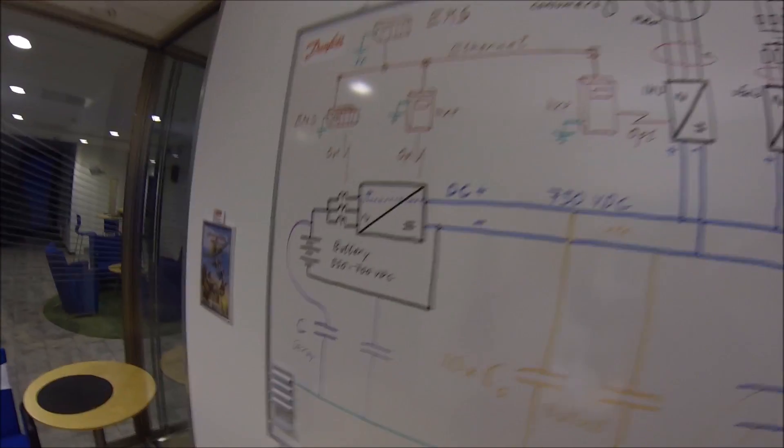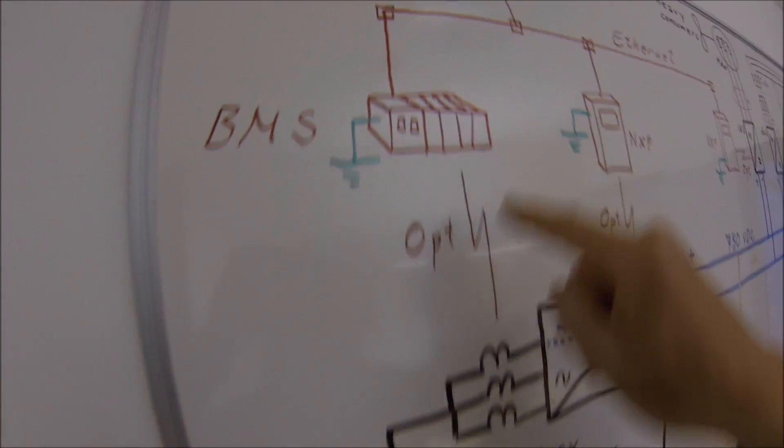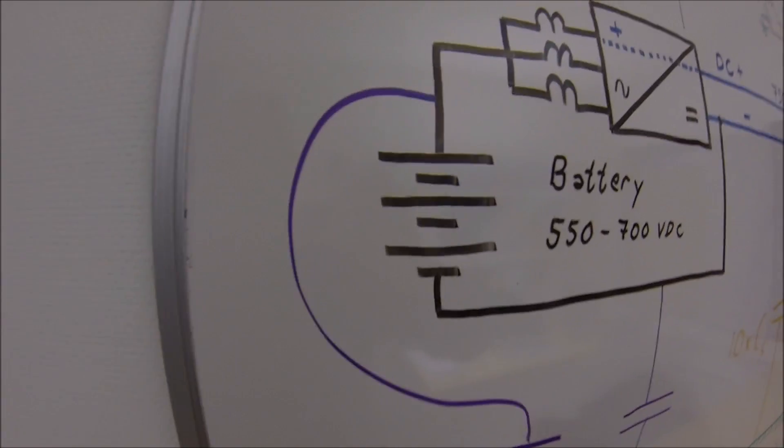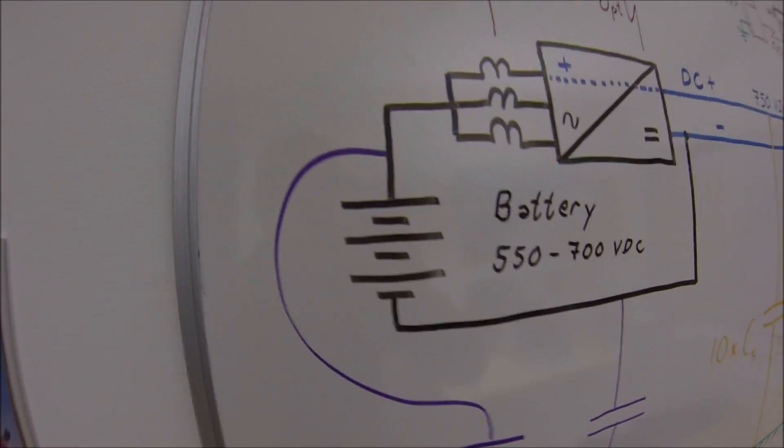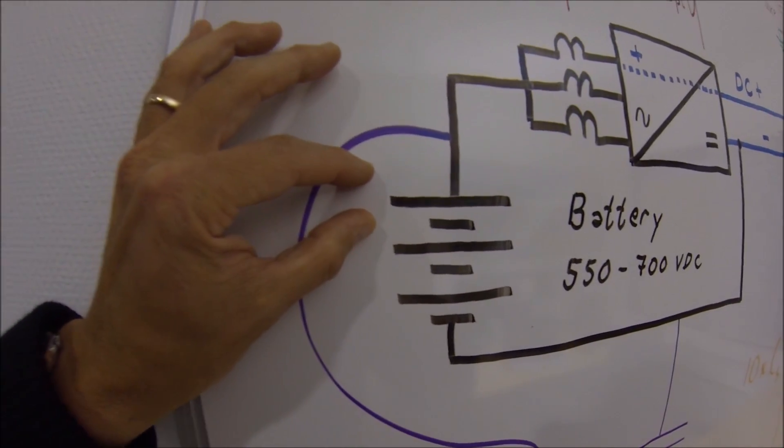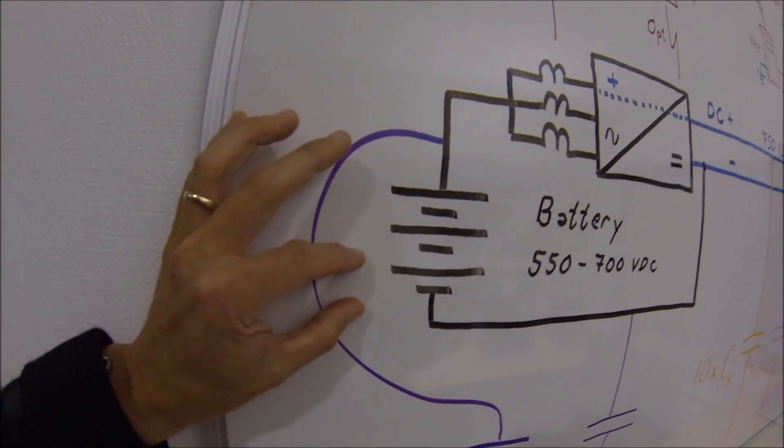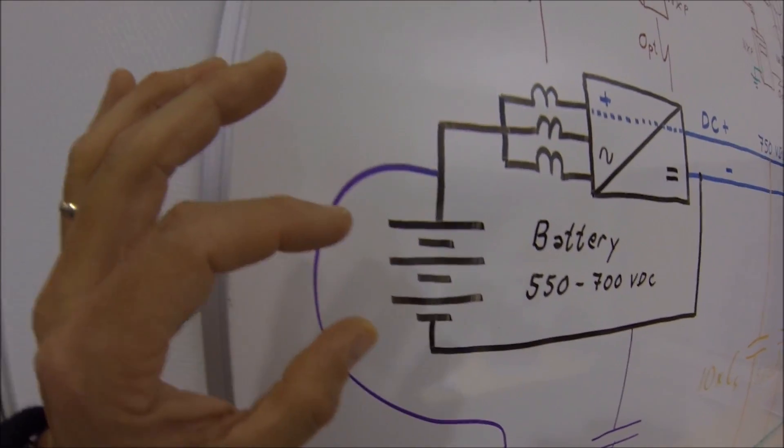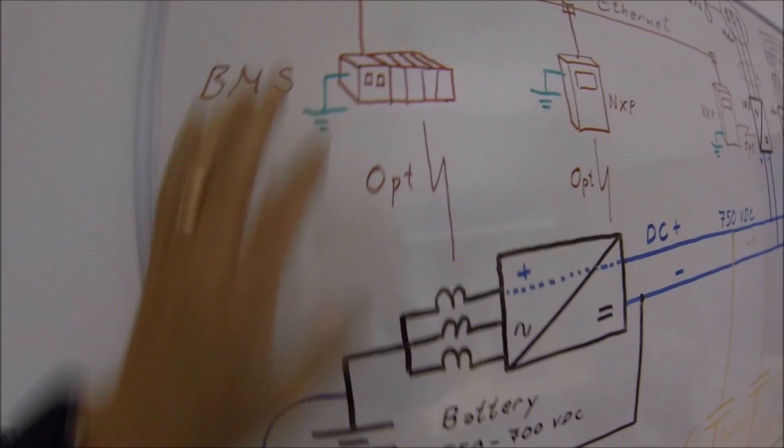Also, you could have the situation where the battery management system has problems communicating with its cells. What has happened? Well, voltage measuring devices and also cell balancing devices here should be galvanically isolated from the BMS.